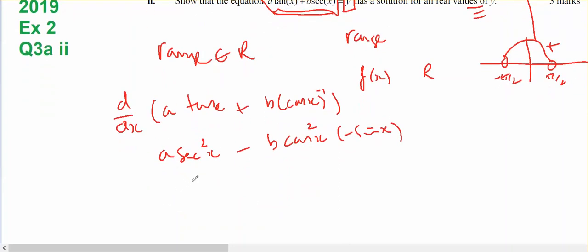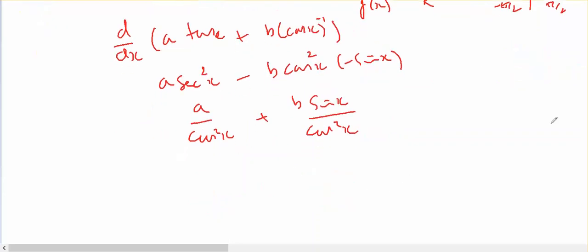And that's going to be a/cos²(x) plus b·sin(x)/cos²(x), which is equal to (a + b·sin(x))/cos²(x).